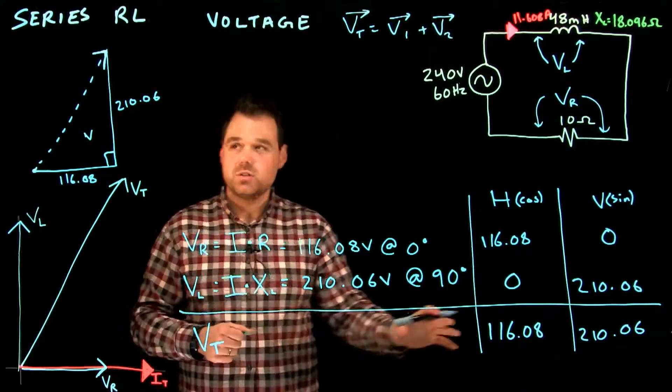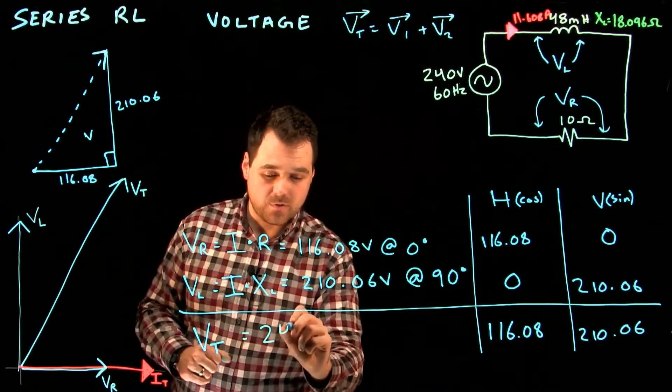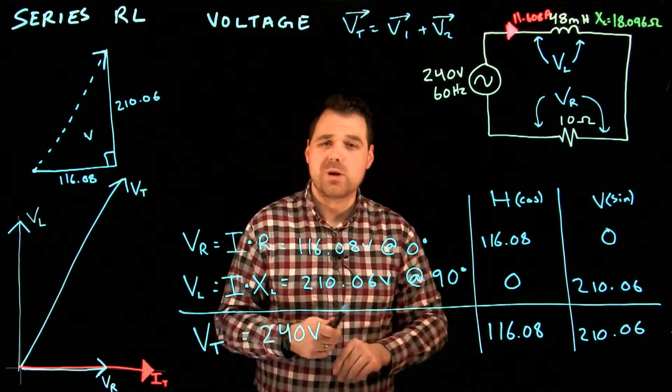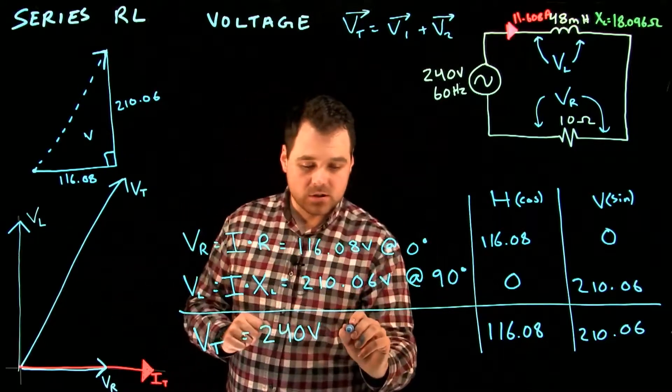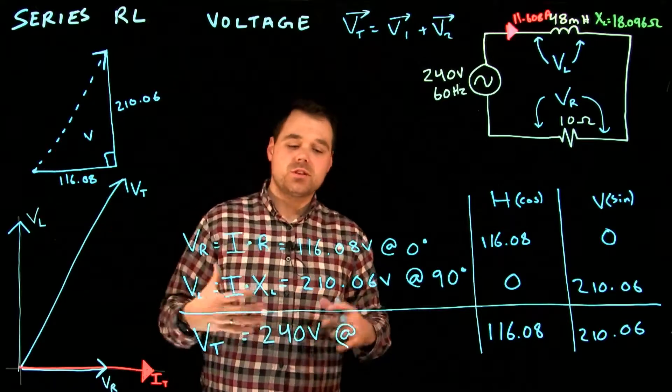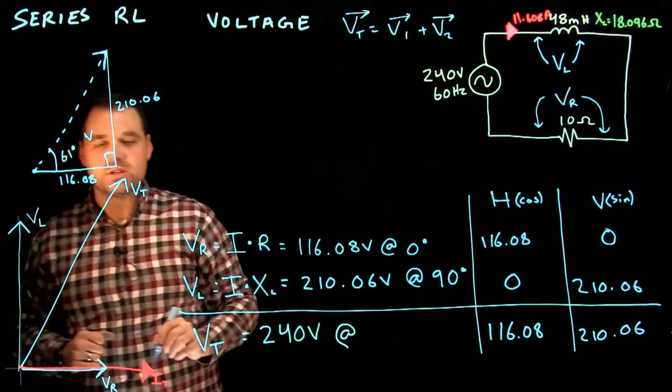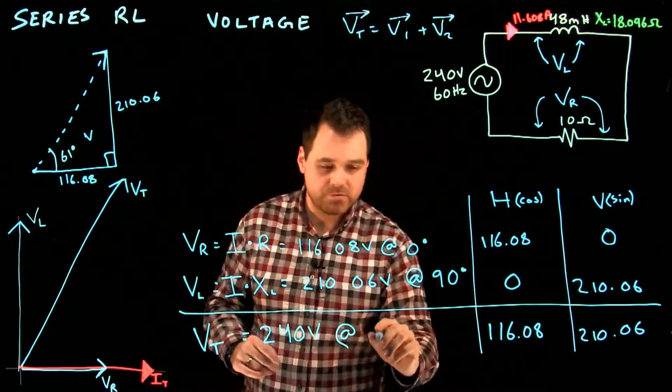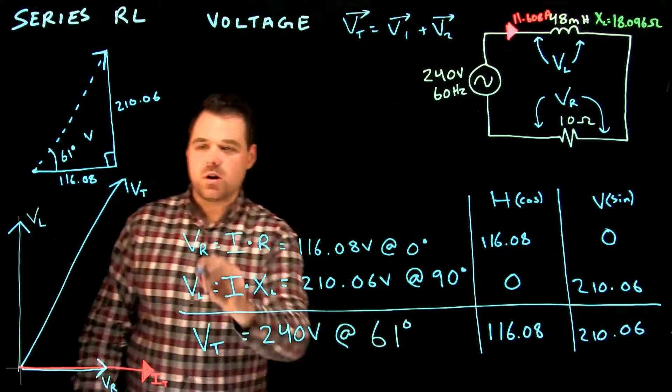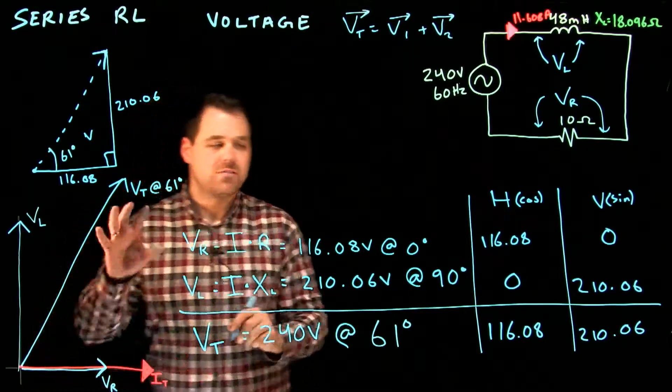So now we do VT. We do Pythagorean's theorem here, we get 240 volts-ish, right? We want to be very close. We've done a little bit of rounding along the way. Now we have to figure out our angle, so we can do any of our trigonometric functions and we can figure out this angle. This angle is going to be approximately 61 degrees, right? And we can use any trigonometric function we want to find that. And that's how we know where to put VT on our final phasor diagram.